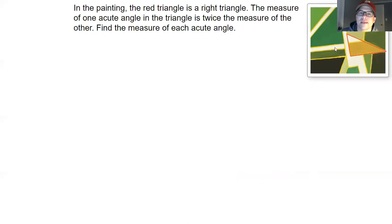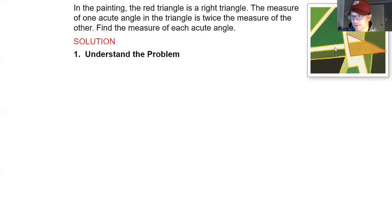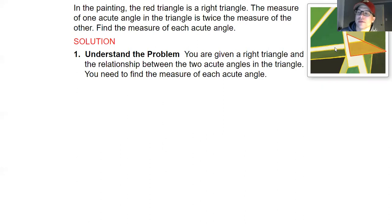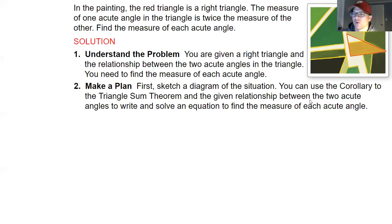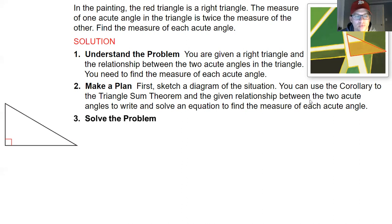In this final example, a red triangle in a painting is a right triangle, so one angle is 90 degrees. The measure of one acute angle is twice the measure of the other. We need to find each acute angle. We know one is 90, and the other two must also add up to 90, with one being twice the other.